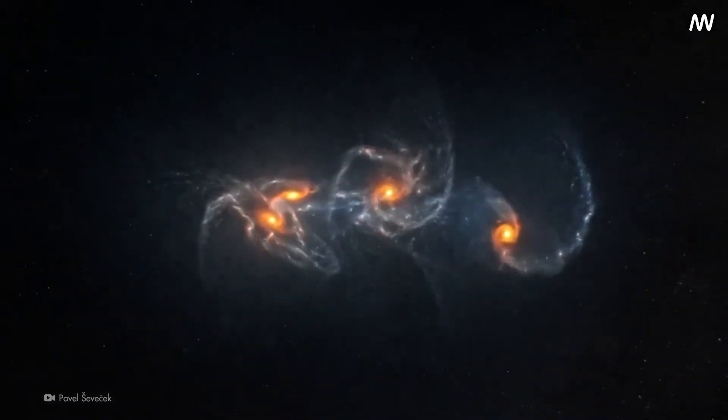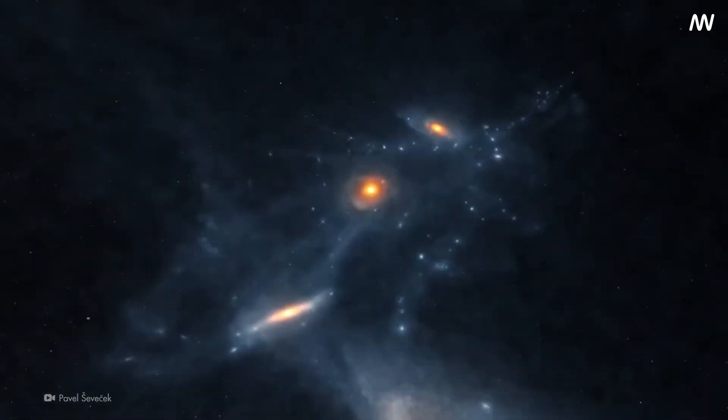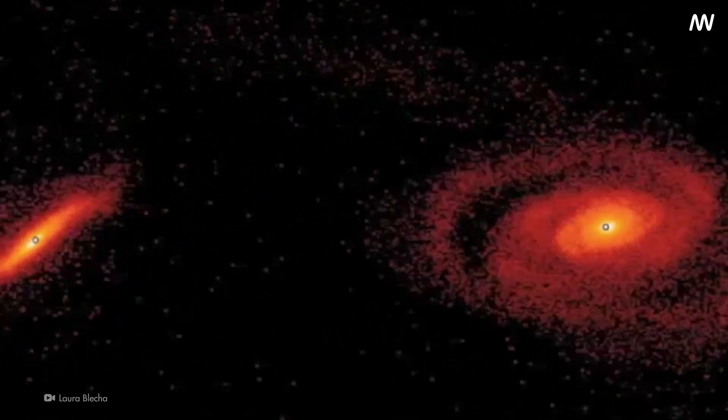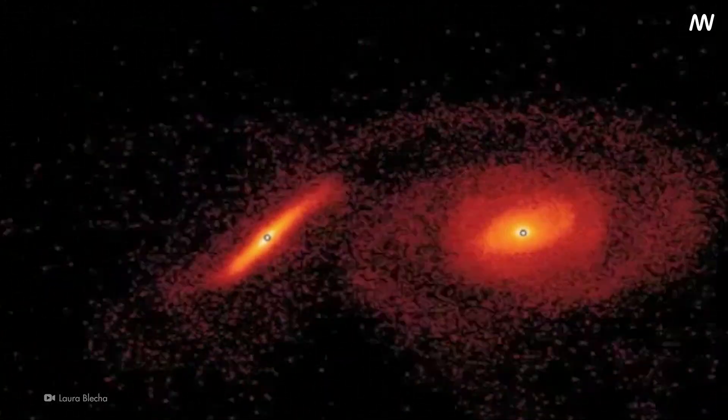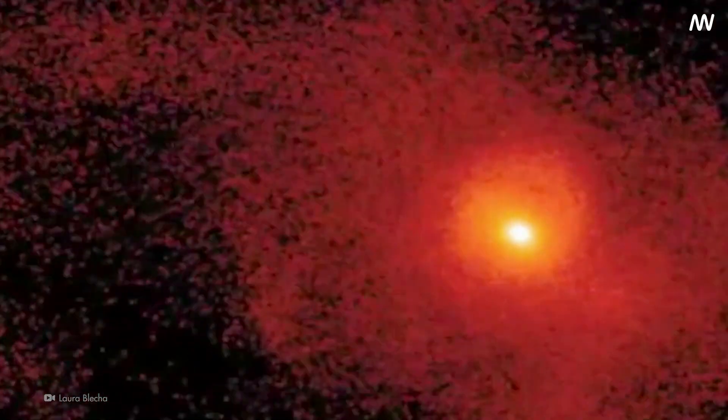But why does this happen? Well, it's all about energy. In this gravitational mosh pit, energy is being transferred between the black holes. Sometimes, one black hole can gain enough energy to overcome the gravitational pull of the other two and get ejected from the galaxy.